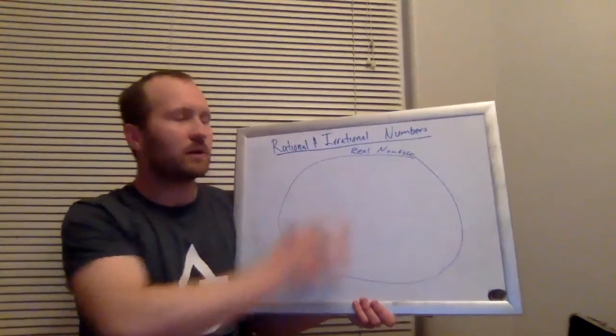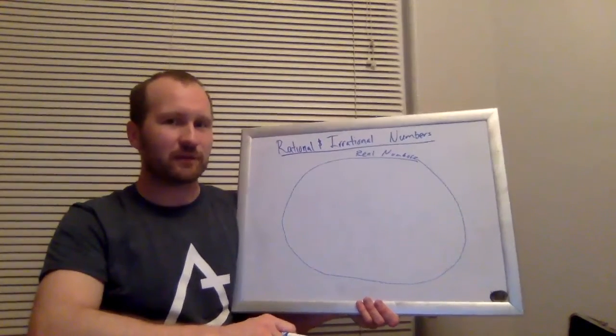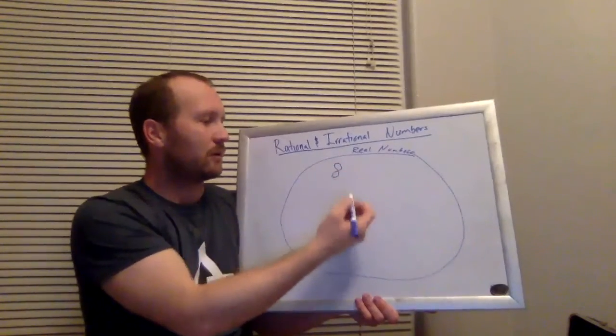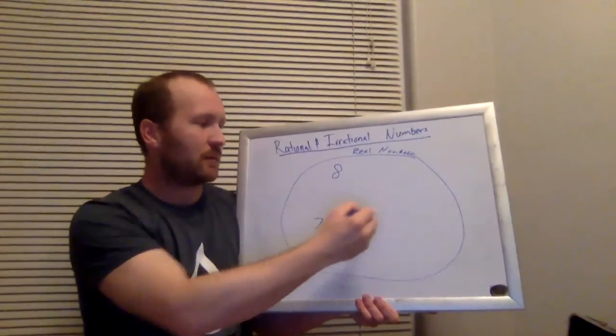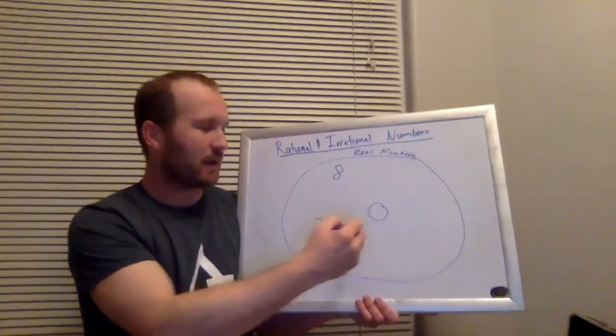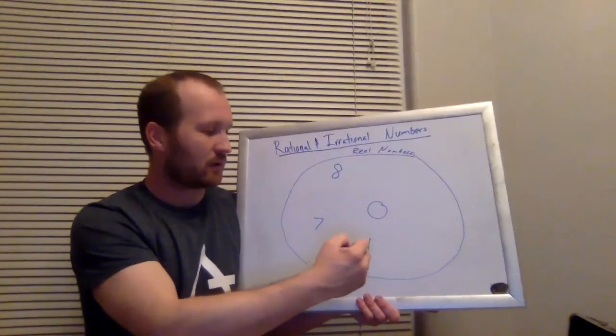So what are some of the real numbers? Try to just think of numbers that pop into your head. Well, maybe eight or seven. How about zero? Let's see, what about negative numbers, like negative one or negative two?